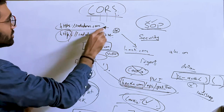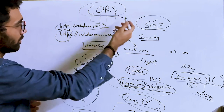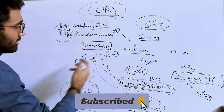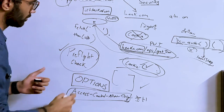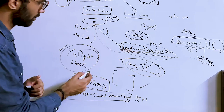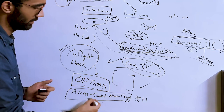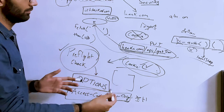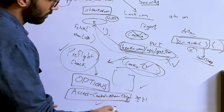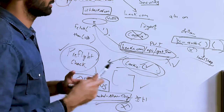To summarize: there is the Same-Origin Policy implemented in browsers as a security measure. Browsers perform a preflight check — they check whether the requesting origin is allowed to make the request, by calling the URL with the OPTIONS method and reading the allowed headers and methods. Depending on the server's response, the browser either blocks or allows the request.